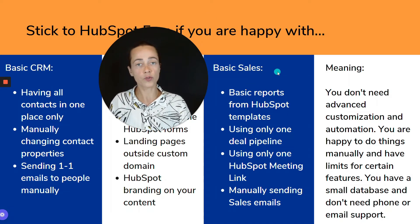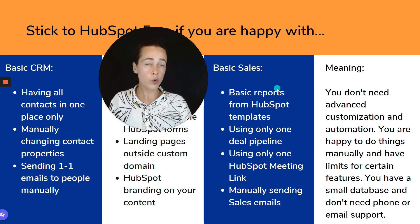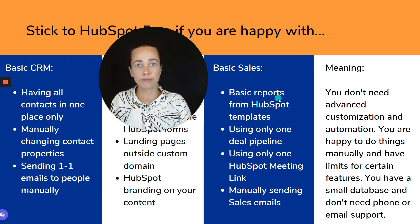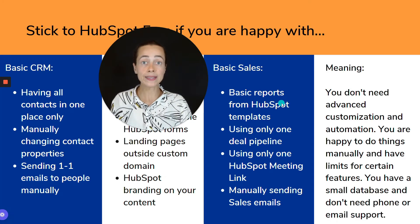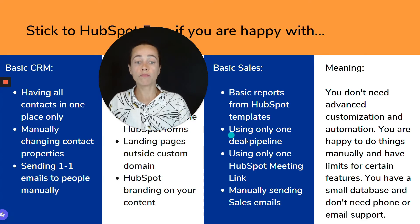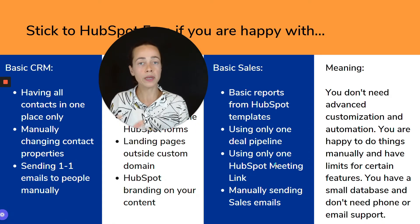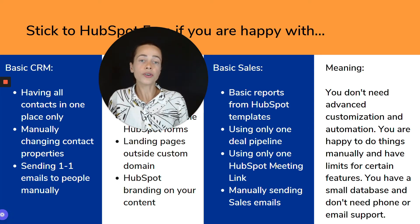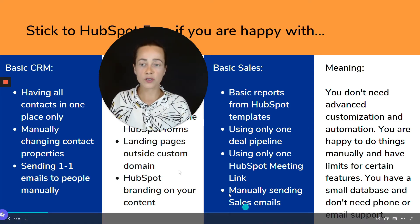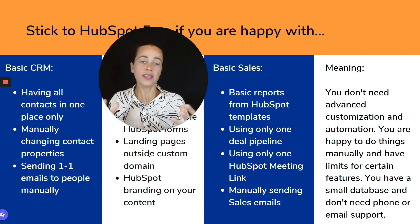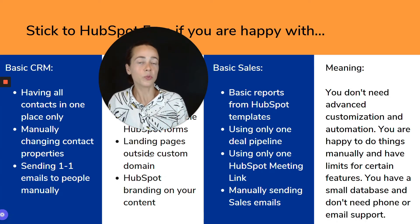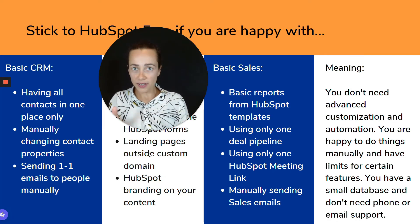Stick to free if you're happy with basic sales functionality — meaning you don't need to create custom reports and you're happy using HubSpot's own report templates. You're happy with only one deal pipeline, you don't need multiple pipelines, and you're happy with only one HubSpot meeting link — that calendar widget where people can book meetings with you. And in general, you're happy doing things manually: manually sending sales emails, manually sending marketing emails, without automation.